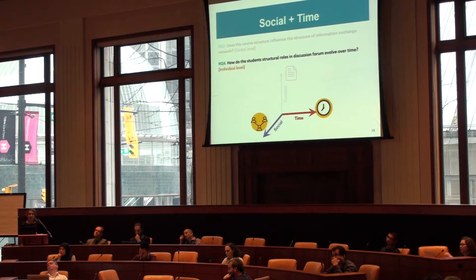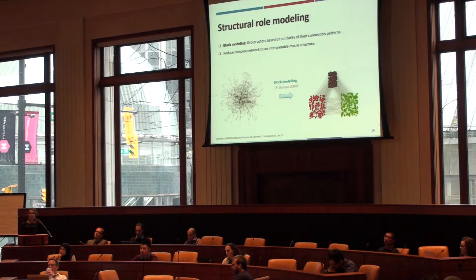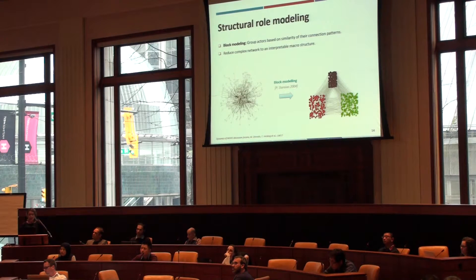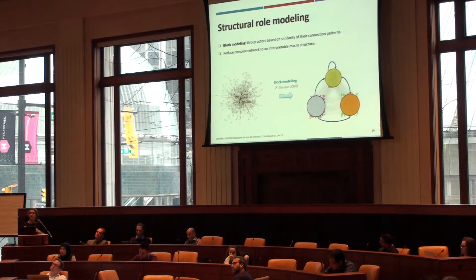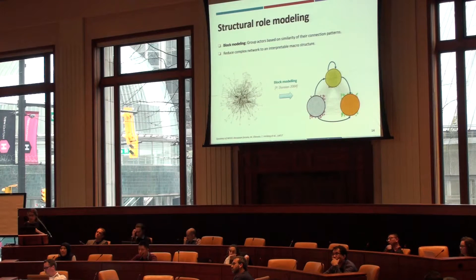At the individual level, we were interested in how individual roles in this network evolve over time. To capture a student's role in the network, we apply a method called block modeling, which groups learners based on the similarity of their connection patterns. This enables us to reduce the complex network into an interpretable microstructure. In this case, the microstructure consists of three roles: two peripheral roles at the bottom are learners who have only outgoing or only incoming connections, while the one on top represents learners who have both incoming and outgoing connections and are also interconnected among themselves. Based on these connection patterns, we label these three roles as core, help giver, and help seeker.